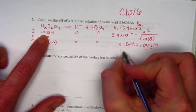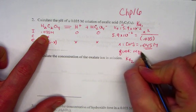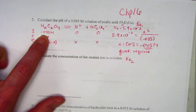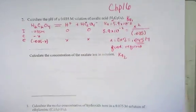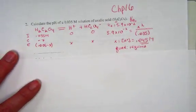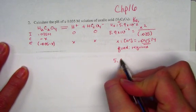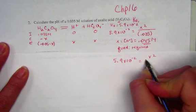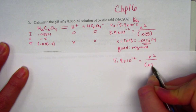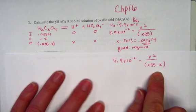So what we're looking at is the quadratic equation would be required since we're breaking the 5% rule well over 100%. We'll have to go back to the drawing board and set up same equation but including the minus X on the bottom value.